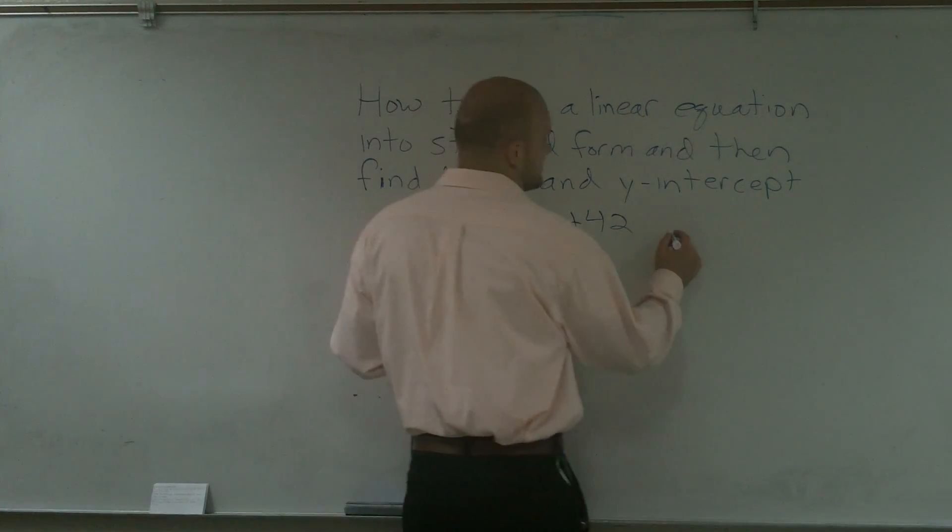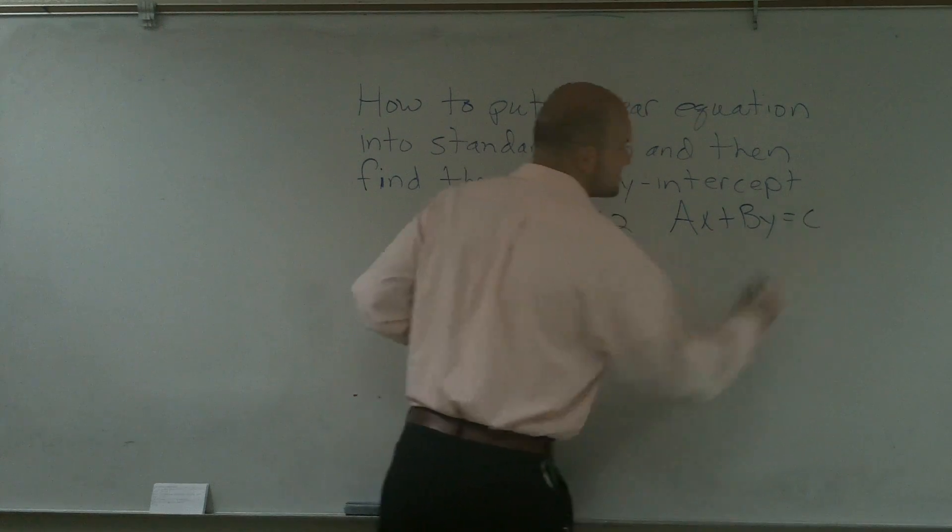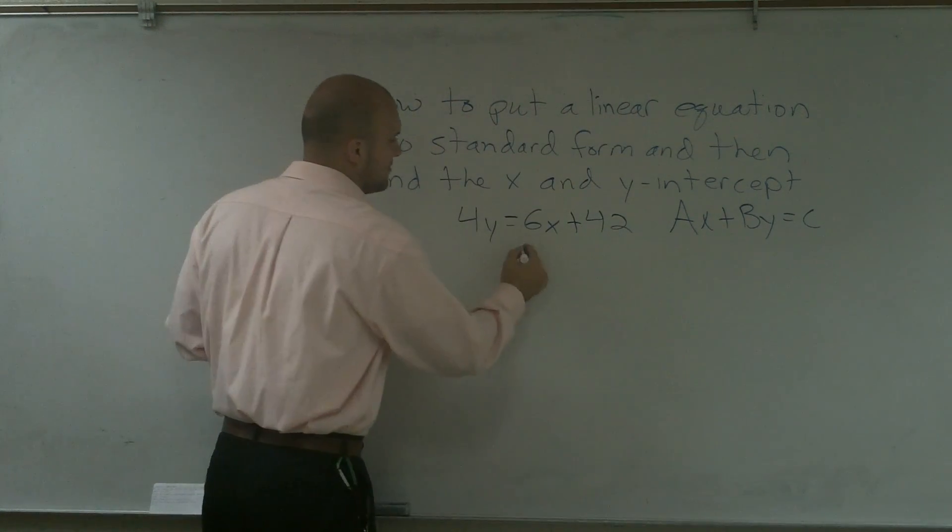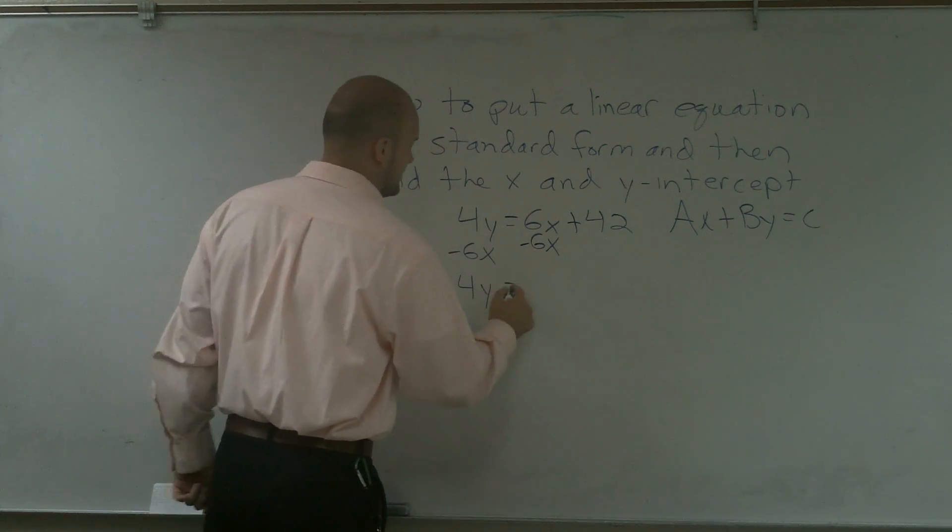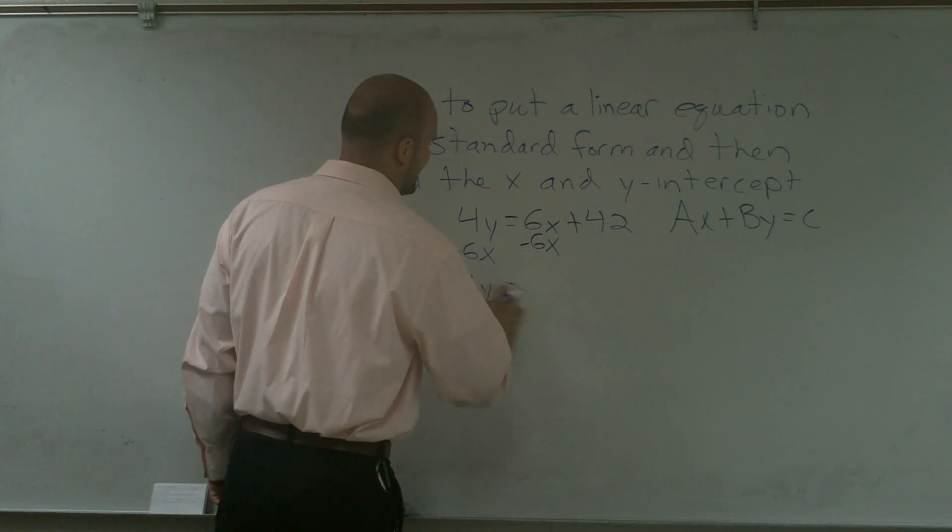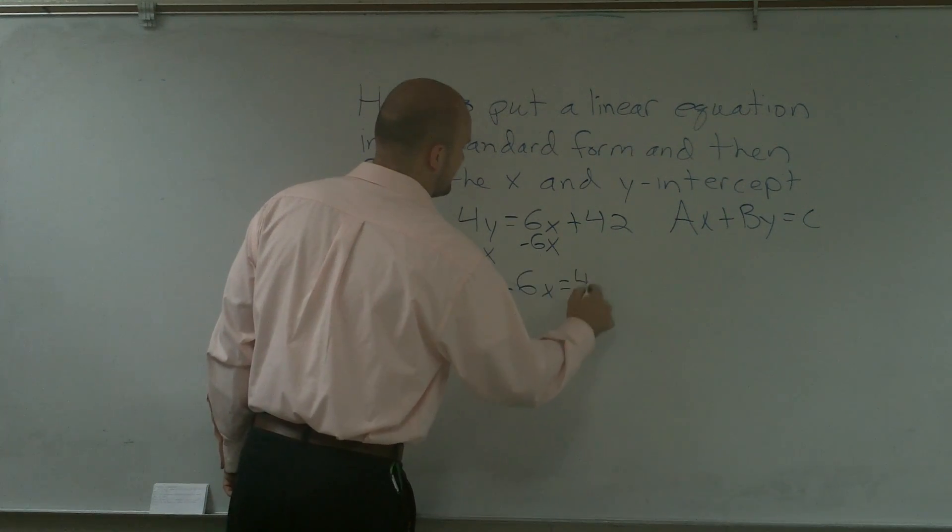Remember, standard form is ax plus by equals c. So to simply put this in the standard form, I need to subtract my 6x on both sides. Therefore, I obtain 4y minus 6x equals 42.